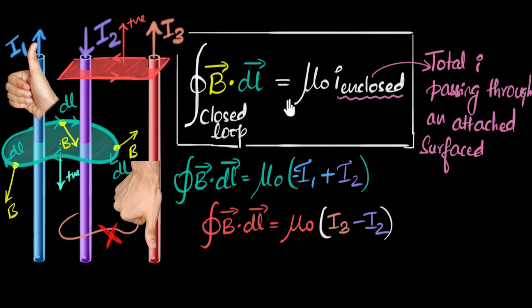And sometimes when things are very symmetric, we go for Ampere's circuital law because it makes our calculations simpler. Again, something we'll see in future videos.